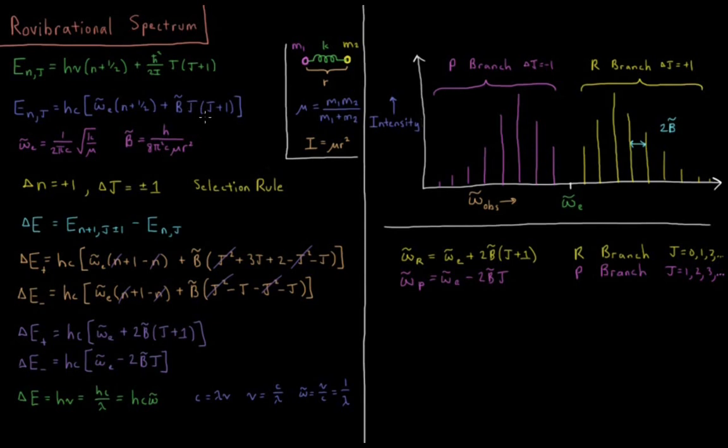Here the rotational constant b and vibrational constant omega_e. Omega_e is equal to 1 over 2 pi times speed of light in centimeters per second times the square root of our spring constant divided by the reduced mass. B bar equals Planck's constant divided by 8 pi squared speed of light in centimeters per second, reduced mass times r squared.